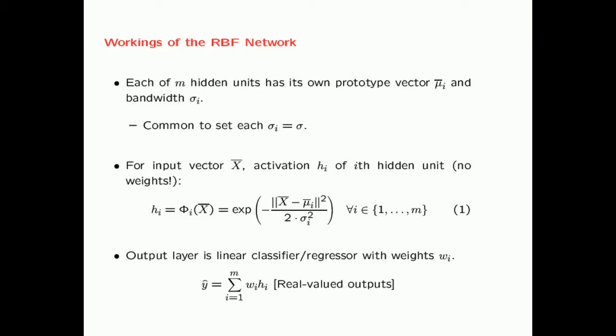Once you compute the activation value, the output layer can be a linear classifier or regressor with weights w_i. The output is simply the sum of w_i times h_i over all hidden values. You can also apply a nonlinear activation function — for example, a logistic activation function in the output layer if you want to output a probability.